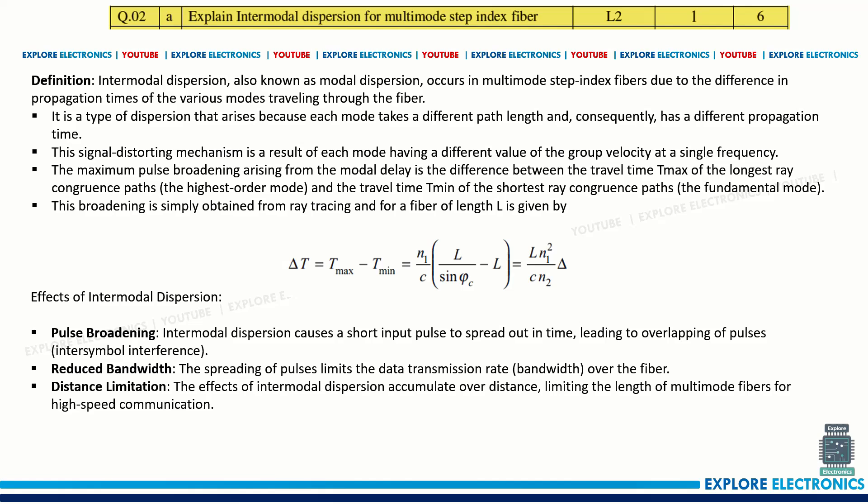Intermodal dispersion is also called modal dispersion. It happens because of the propagation time delay in a multi-mode step index fiber. Here is the explanation for that. You can also write the effect of intermodal dispersion — what happens when this dispersion occurs: light pulse broadening will happen, bandwidth will be reduced, and we cannot achieve the required transmission distance.